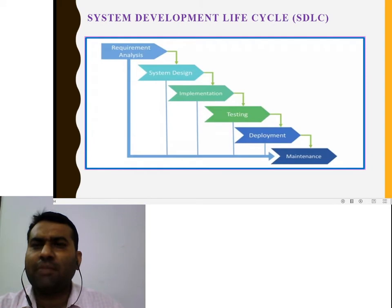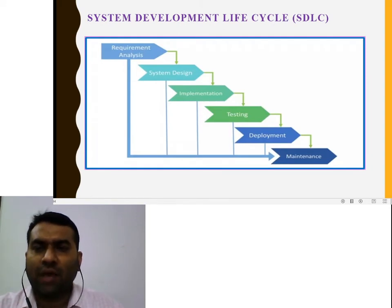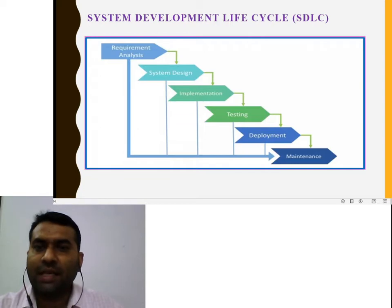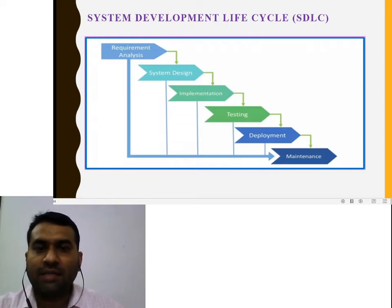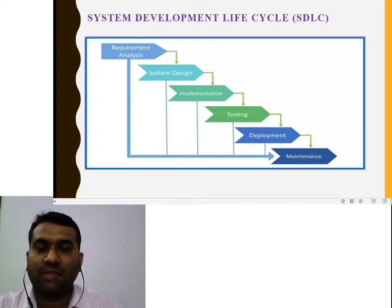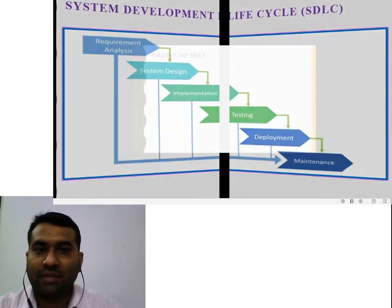The system development life cycle begins with requirement analysis, then system design is decided, then implementation. The system is then implemented, followed by testing — in which the code used in the system development life cycle is tested — and then deployment and maintenance.